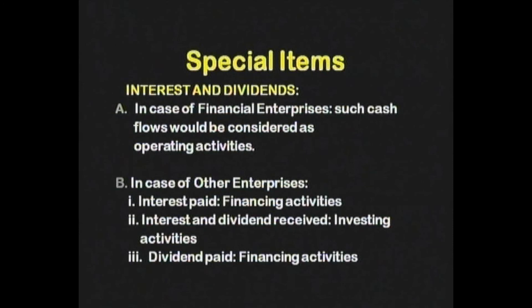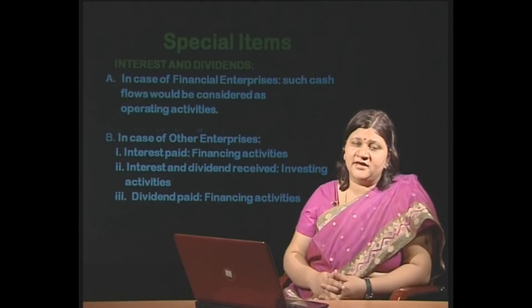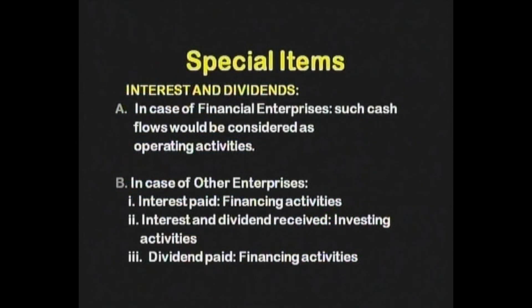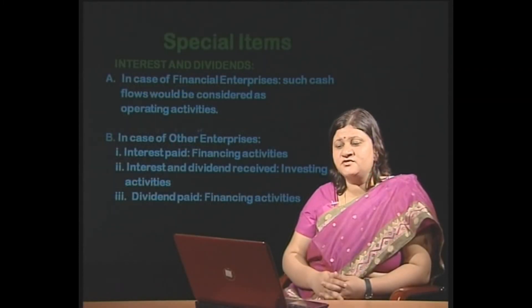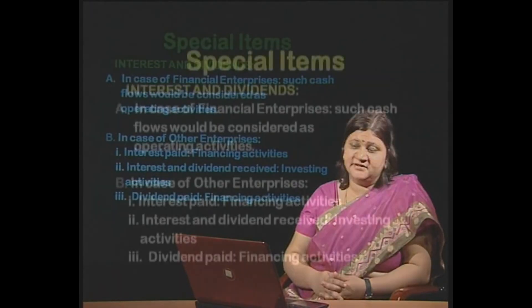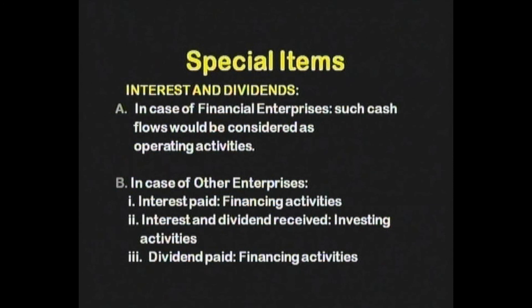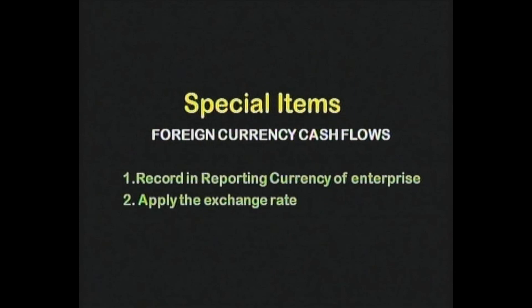The next special item is interest and dividends. These should be understood by segregating enterprises into two parts: financial enterprises and other enterprises. Financial enterprises are those doing the business of financing — for them, cash flows from interest and dividends would be considered as cash flows from operating activities. In case of other enterprises, interest paid would be a financing activity; interest and dividend received would be part of investing activities as they are returns on investments made; while dividend paid is again a financing activity. Foreign currency cash flows need to be recorded in the reporting currency of the enterprise with the appropriate exchange rate applied for conversion.